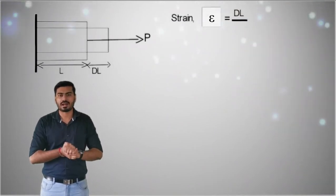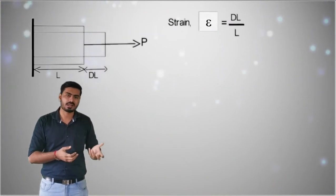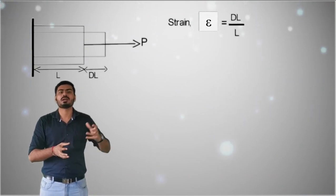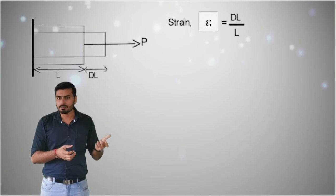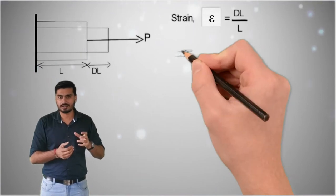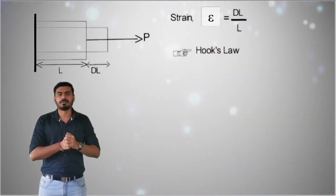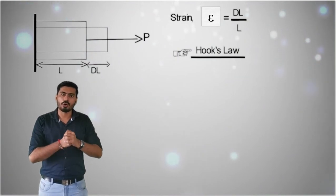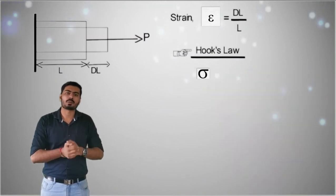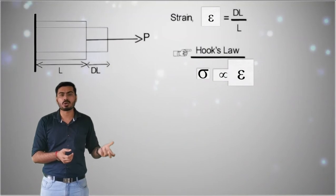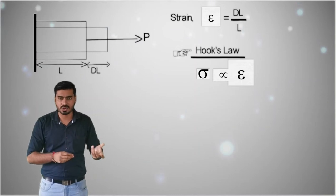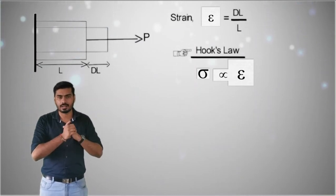So stress and strain are the basic two parameters discussed in this introduction. These two parameters can be related using one very important theorem known as Hooke's Law. Hooke's Law states that within the elastic limit, the value of stress is directly proportional to strain — that is, σ is proportional to ε. This law will give us different parameters like the change in length equation, which will be applied in actual examples.